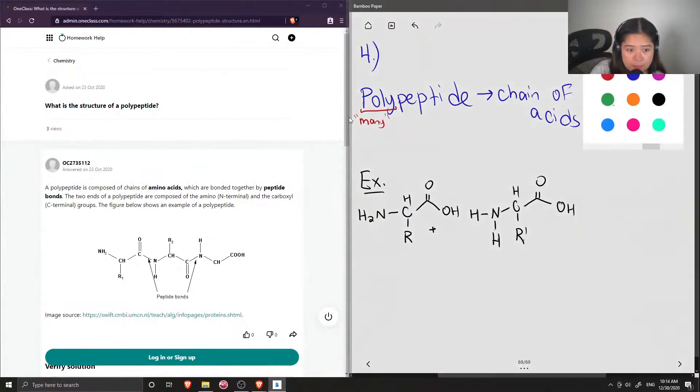So what happens is a dehydration synthesis that involves the removal of water so that these two molecules can come together to form a larger molecule, and this continues and you can have a long chain of amino acids.